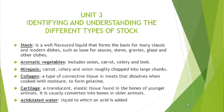Cartilage is a translucent elastic tissue found in the bones of younger animals, and is usually converted into bone in older animals. Acidulated water is a liquid to which an acid is added — the acid can be wine or lemon juice.